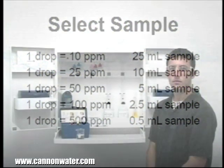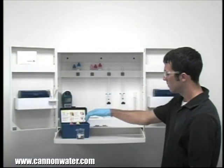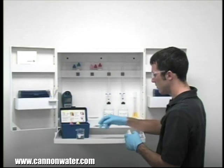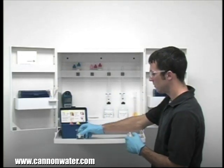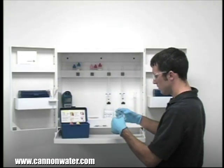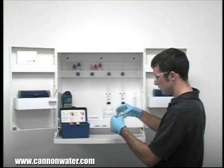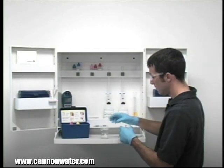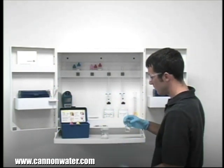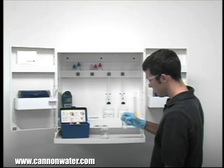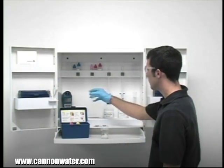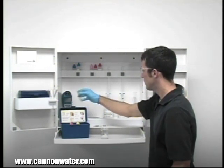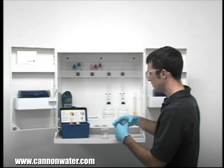The next step according to the endpoint ID procedure is to take an accurate sample. The smallest change in sample size will lead to inaccurate results. Before taking your sample, it's important to rinse the vial with the sample to be tested. This minimizes the chance of contamination from a previous titration.